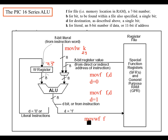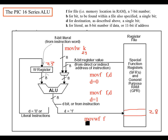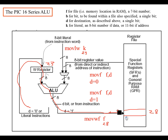That gets a literal value into the W register. The next command gets a value out of the W register — move WF takes that value and stores it into a file location. For example, if we have file address location 28 and say move WF to 28, it's going to take whatever's in the W register and store it at location 28.